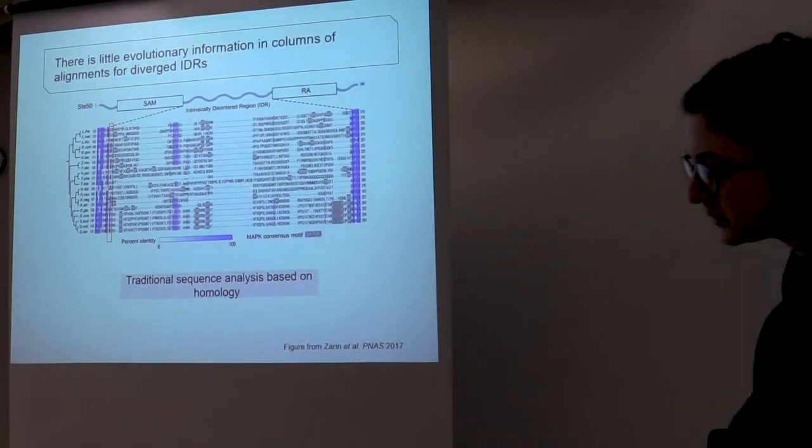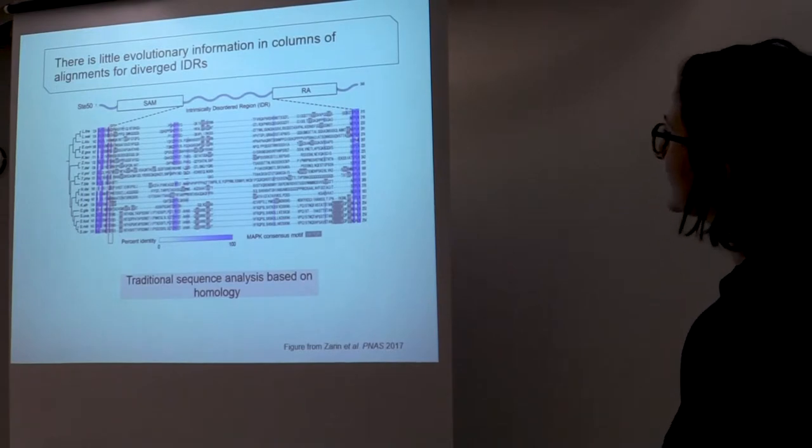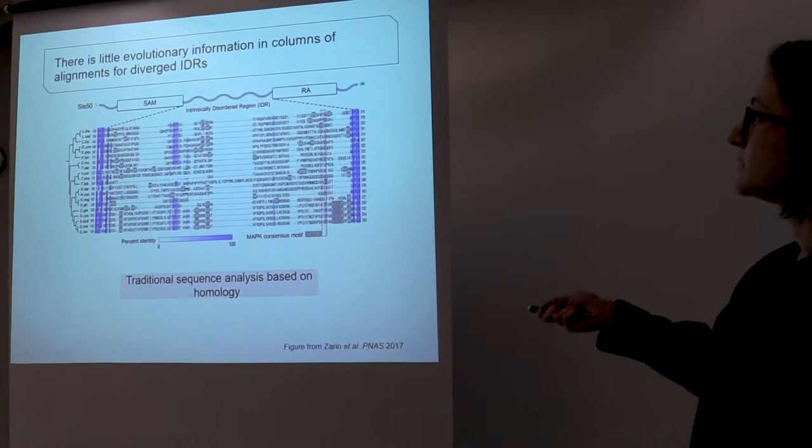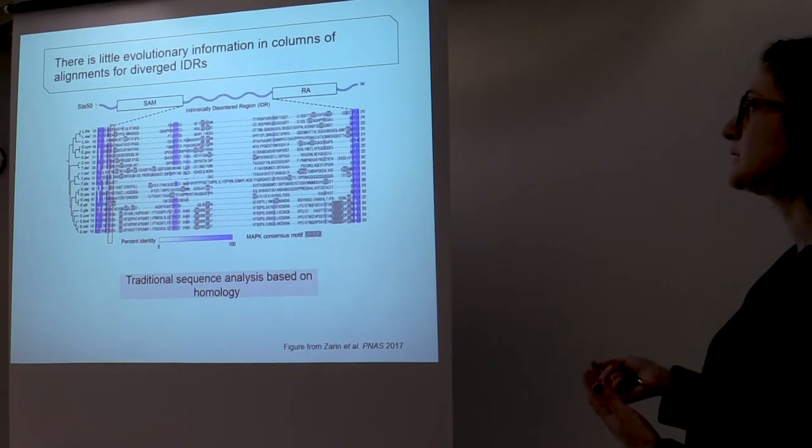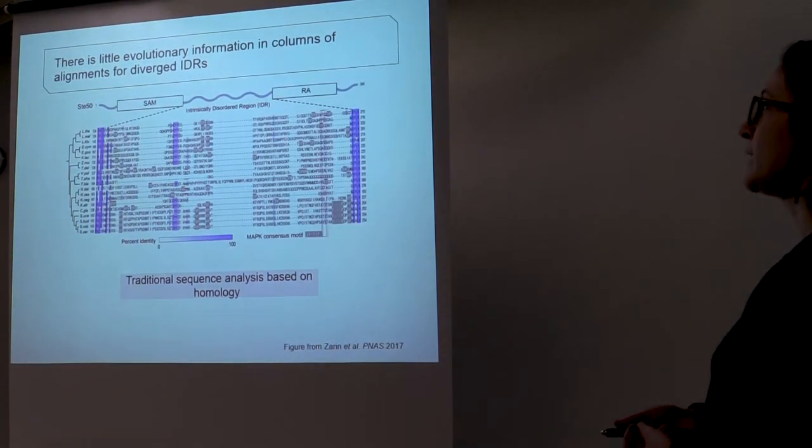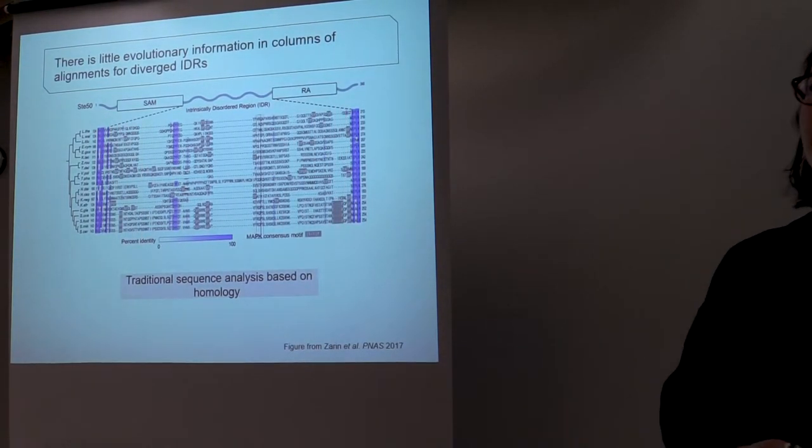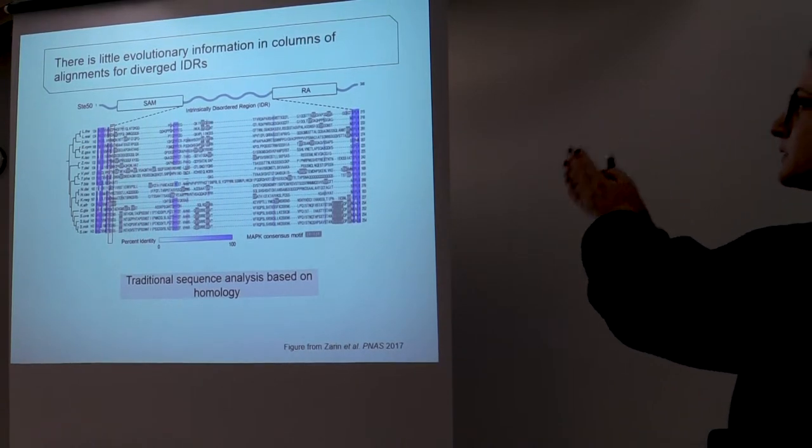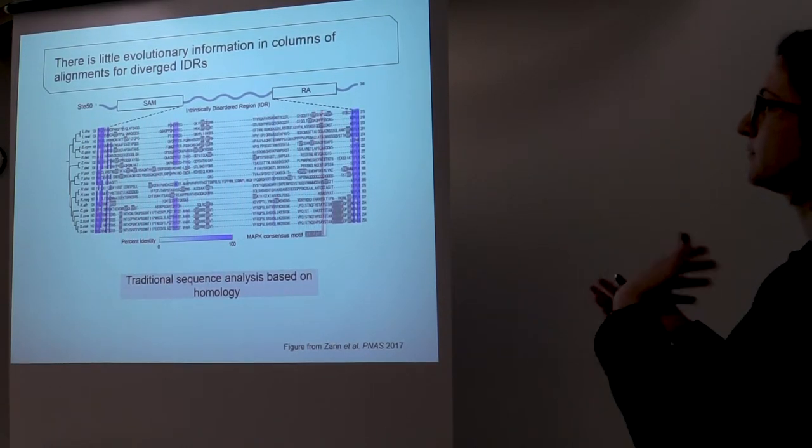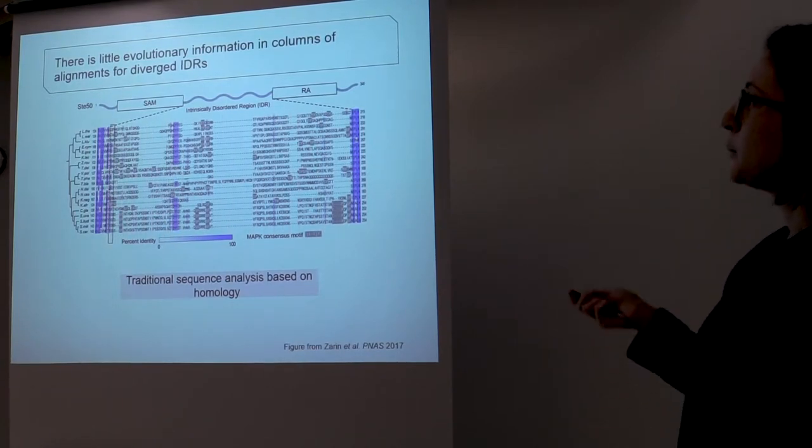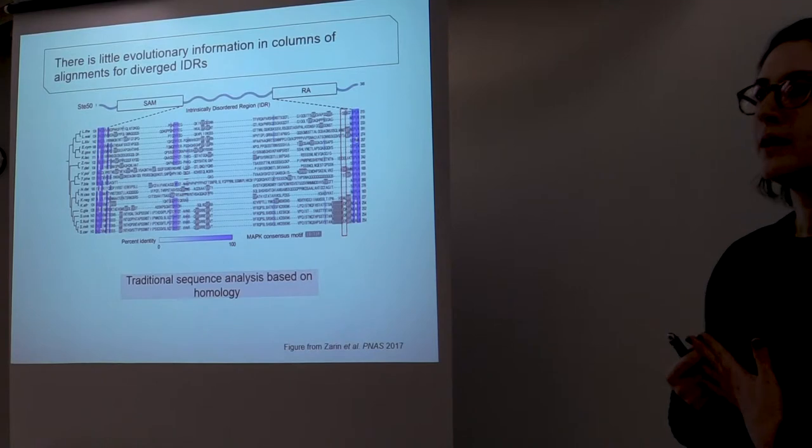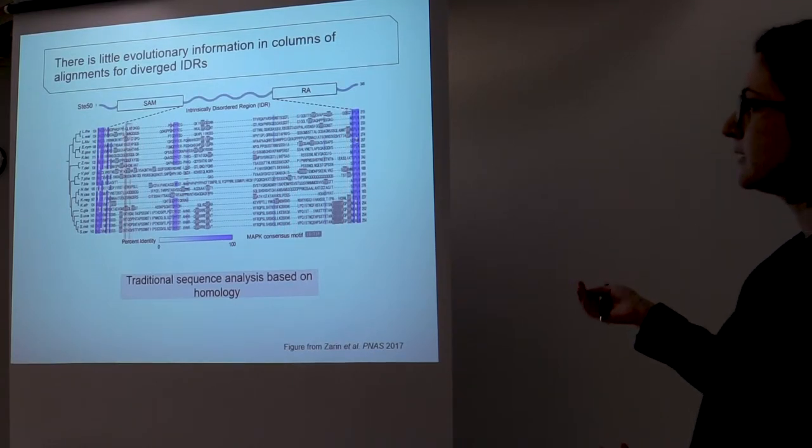So the problem that we have is that actually the typical way of analyzing protein sequences doesn't work for these regions. So like I mentioned, usually you would look at an alignment to see if it's conserved or not, you would look at a column in the alignment, but you can see there is no signal for conservation in the columns of this example alignment.